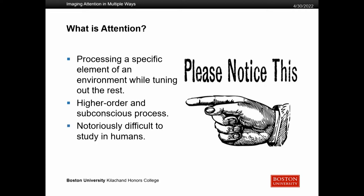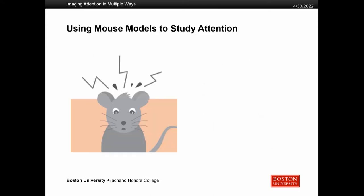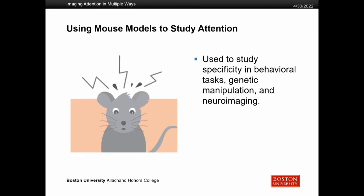Attention is notoriously difficult to study in humans, for various different reasons. Because of that, we tend to use mouse models when we study attention. Mouse models can be used to study the specificity of behavioral tasks, genetic manipulation, and neuroimaging — all things that we might not necessarily be able to do to the best ability in humans, but that all play a crucial role when it comes to attention.